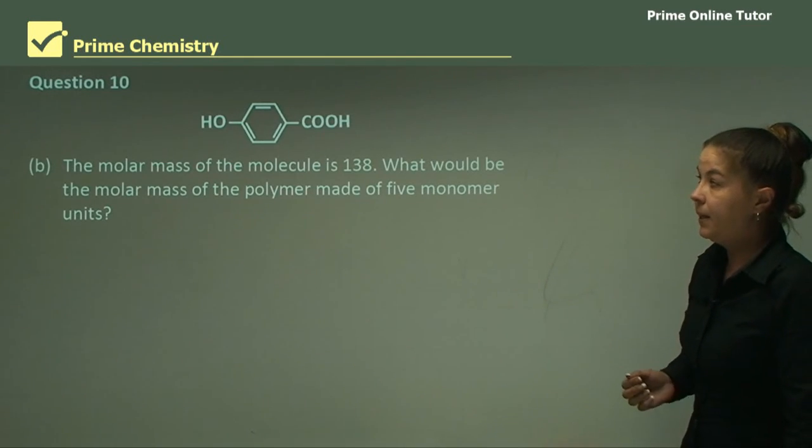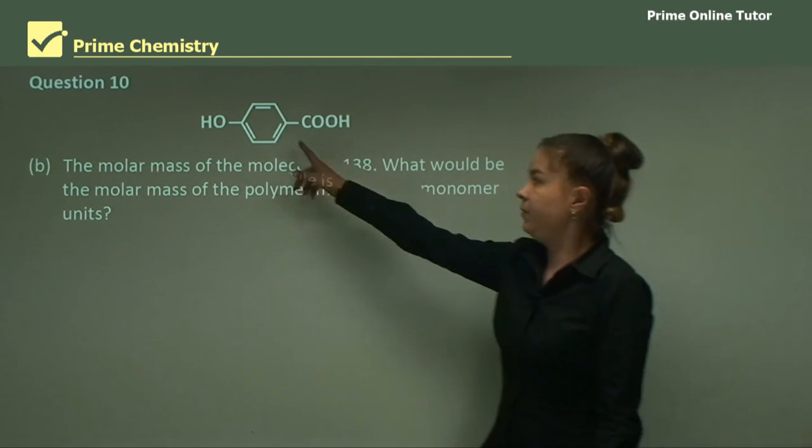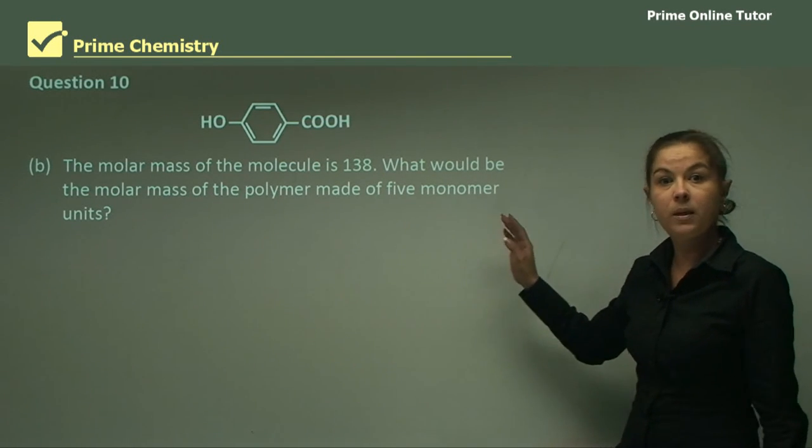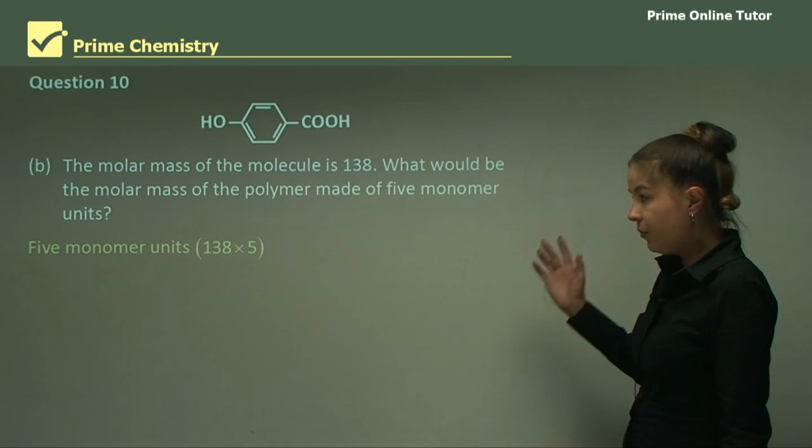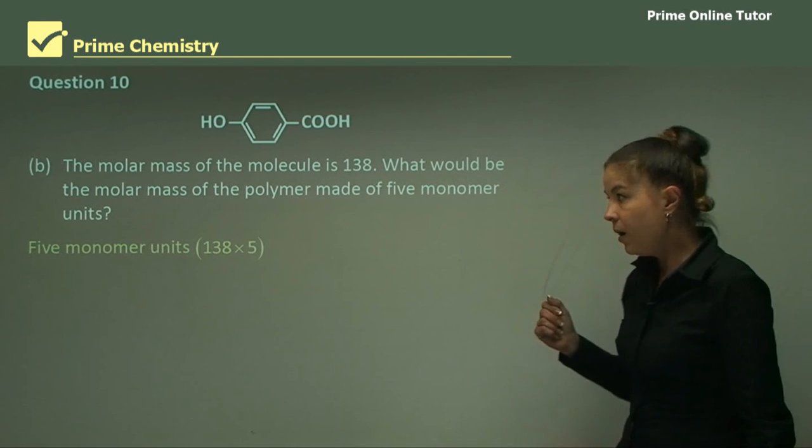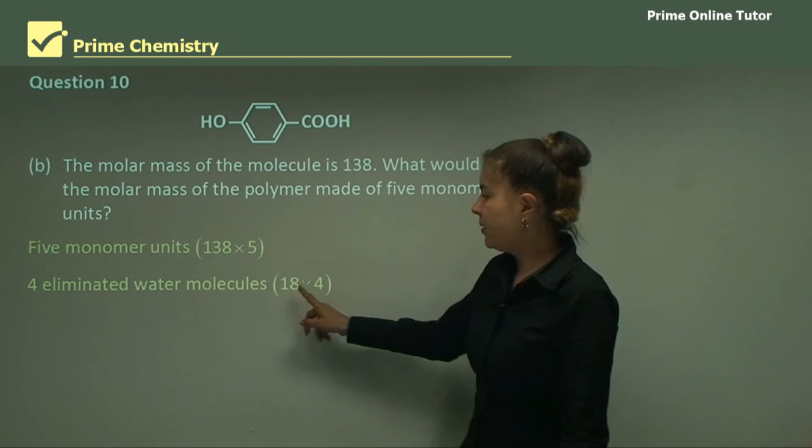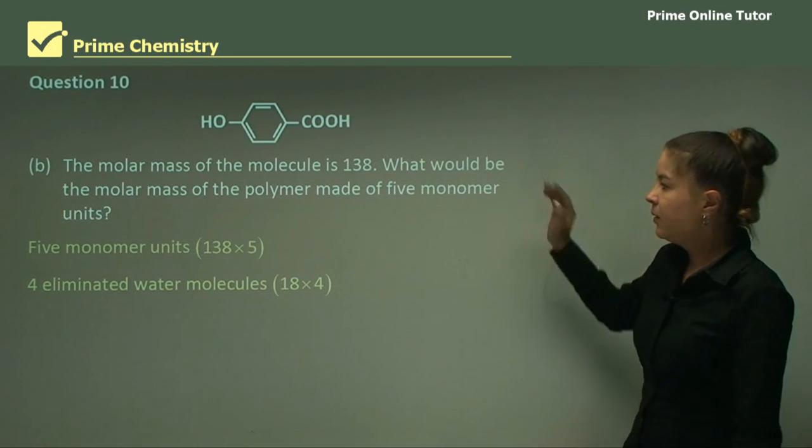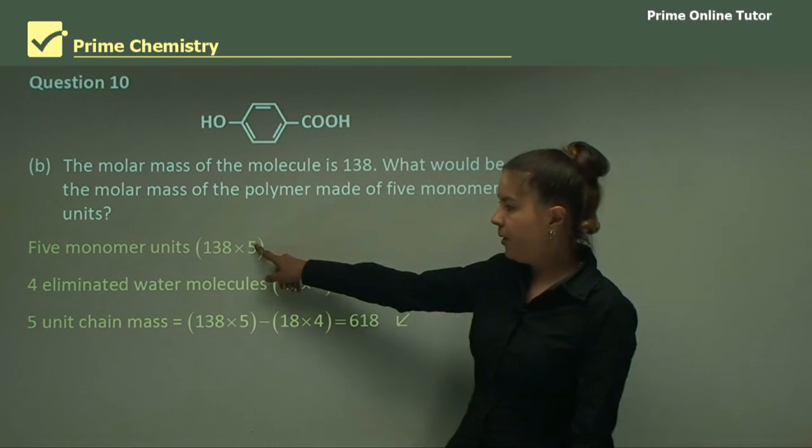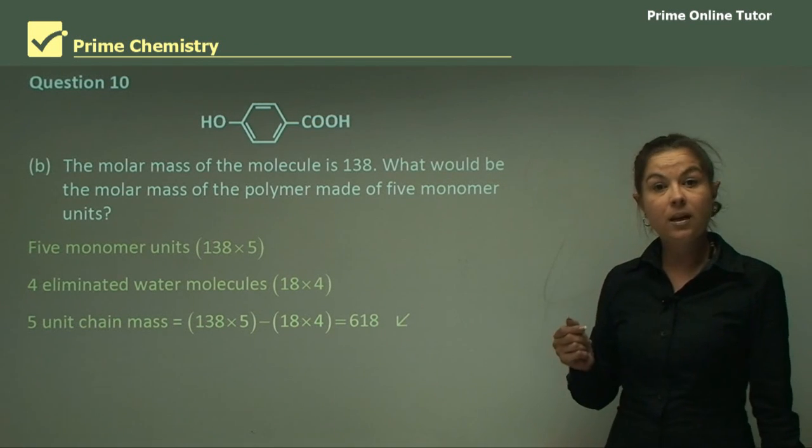And finally, part B, same question. The molar mass of the molecule is 138. So for this molecule, what would be the molar mass of the polymer made of five monomer units? So five monomer units will be 138, this molecule, times five. But remember, we'll get rid of four waters, N minus one. So the weight of four waters will be four times 18. So the molecular mass of a five unit chain will be 138 times five minus 18 times four. And our answer there is 618.